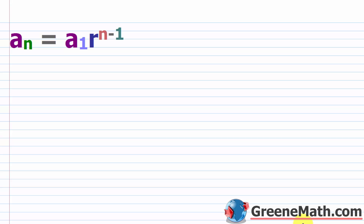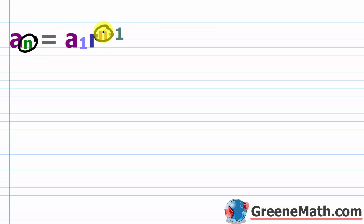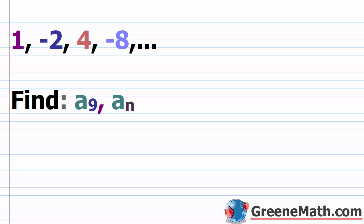You might also be asked to find the nth term of a geometric sequence. There's a really easy formula you can use for this: a sub n is equal to a sub 1 times R raised to the power of n minus 1.